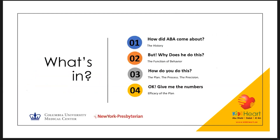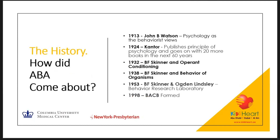By the end of the presentation I'm going to be covering four topics: how ABA came about — the history of ABA; why does a child do what he does; how do we do ABA, since a lot of people ask what we actually do and how we bring about this difference; and then how do we know it works — give me the numbers.